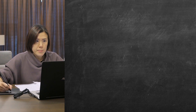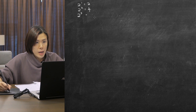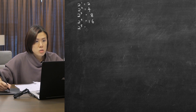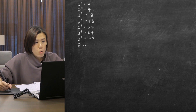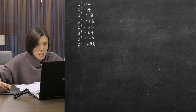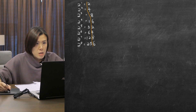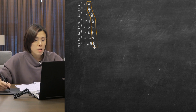2 to the power of 1 is 2, 2 to the power of 2 is 4, 2 to the power of 3 is 8, 2 to the power of 4 is 16, 2 to the power of 5 is 32, 2 to the power of 6 is 64, 2 to the power of 7 is 128, 2 to the power of 8 is 256. If you look at the ones digits, they repeat every four numbers: 2, 4, 8, 6 — and this pattern continues indefinitely.